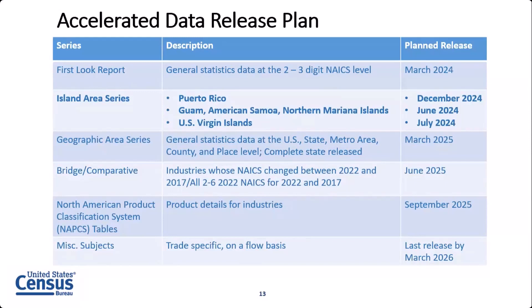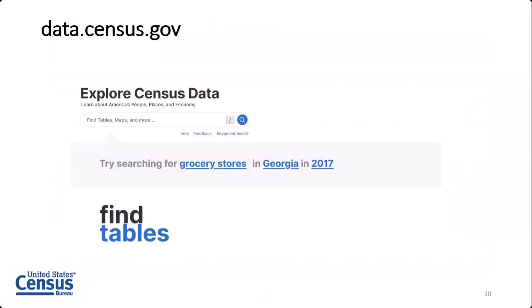This table shows the release schedule for 2022. The first data from 2022 will be released in the first look report in March — that's just for the stateside U.S. All of the island areas data will be released in June and July of next year for the four smaller territories, and then December of 2024 for Puerto Rico. This is an accelerated schedule — we had previously planned to release Puerto Rico in June of 2025, but now we've moved that up six months to December 2024. All of our data will be released at data.census.gov, free and available to anyone interested.